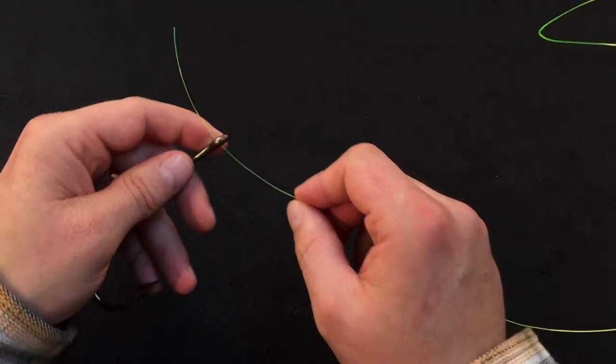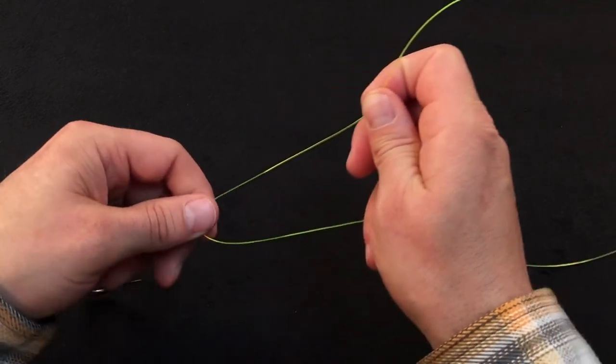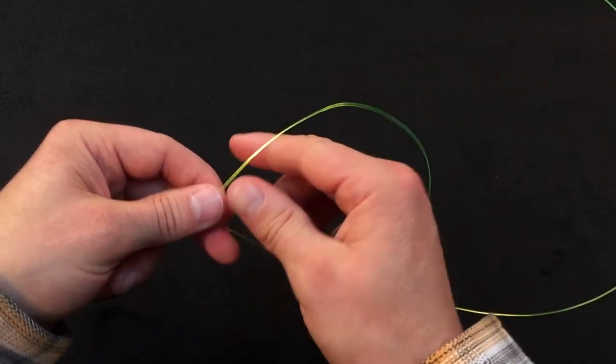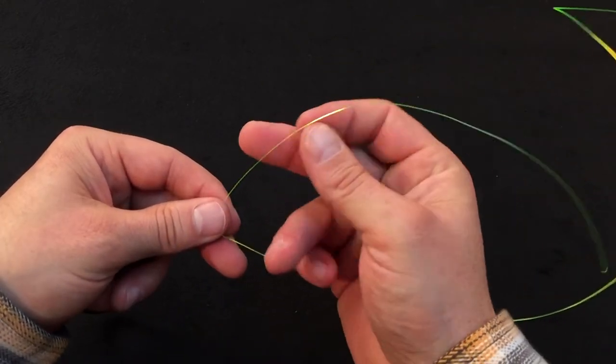To tie the knot, pass your tag end through the eye of the hook. You'll want a fairly long tag end, about 10 inches or so.